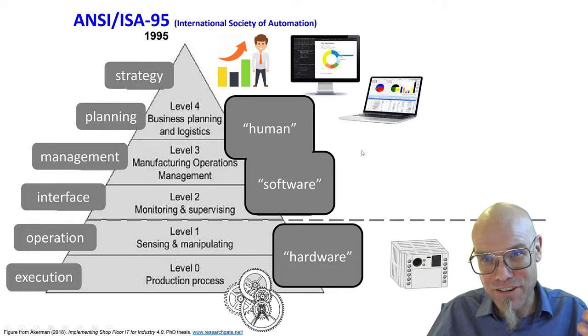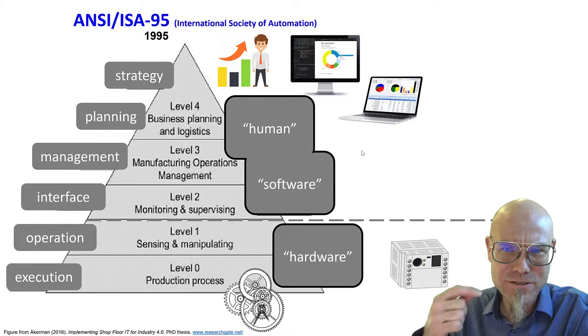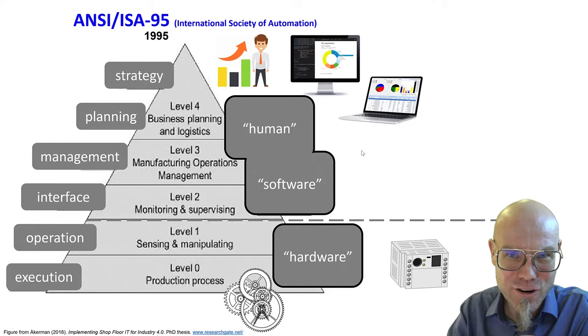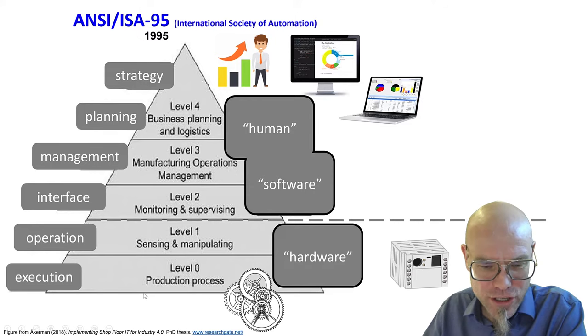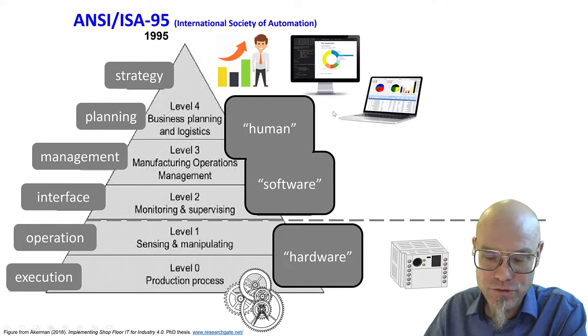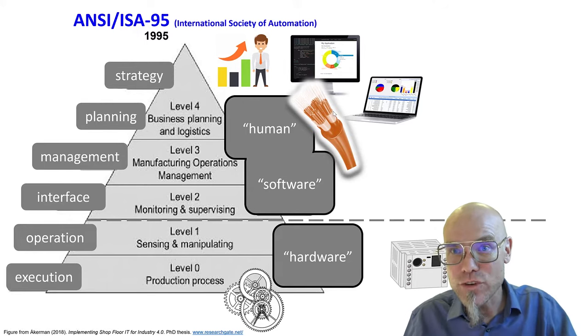If we go back to our framework from the ISA 95 from the International Society of Automation, we did that in an early session of the specialization, the second session, if I'm not mistaken. You can see in this framework how traditionally information flows up from the hardware level up to the decision level. And now the challenge consists in reaching downwards.